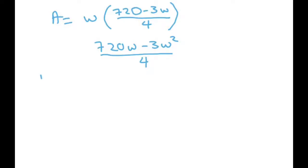Now let's take the derivative of our area with respect to W. And that equals 720 minus 6W over 4. And we set this to 0. The 4 goes away, so you're just solving for W here. So 720 equals 6W. So W equals 120.